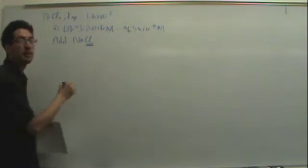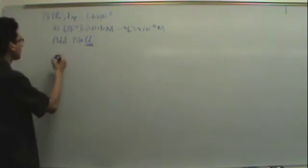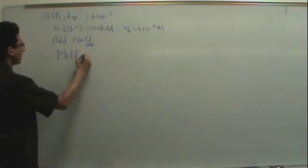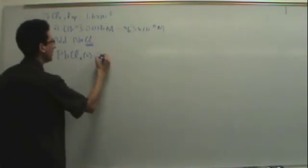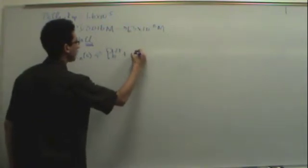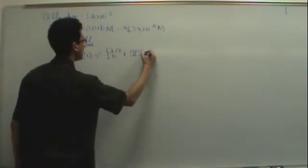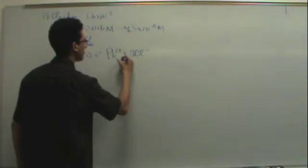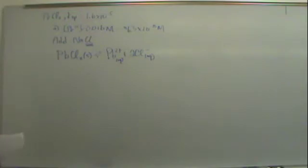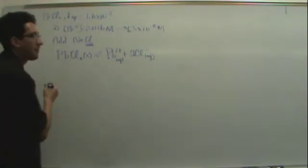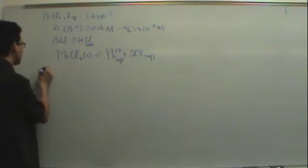We're going to do that by adding NaCl. What that adds is a common ion. So now let's write the reaction. We haven't written it yet. This is our solid lead chloride, and then we go to lead 2+ plus 2 Cl minus, and these are both aqueous.